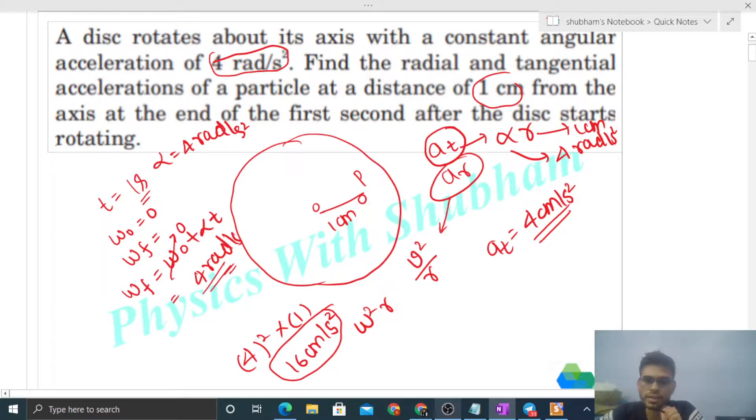So what is the net acceleration by the way? That will be under root of at square plus ar square, right? Net acceleration will be tangential acceleration square plus radial acceleration square and its root.